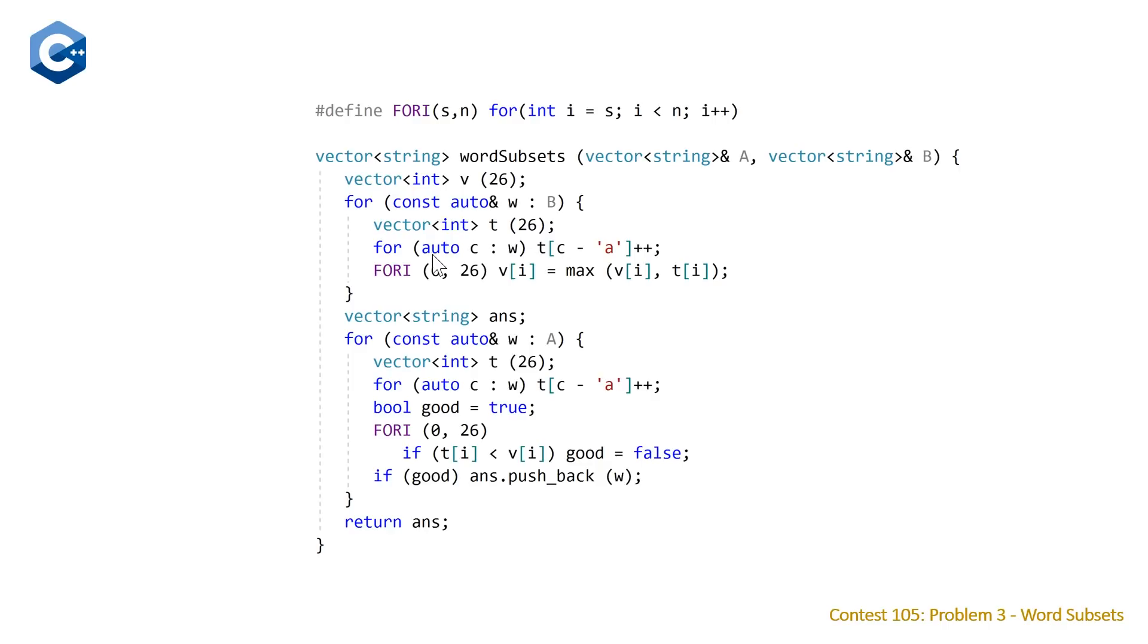And we're going to create our temporary count of each of the characters. And we do that by just looping through each of the characters in our current word, and then getting the index that maps to our current character, which we can just do by taking the character and subtracting the character A. And then we do a post increment here. And then once we've done this, we basically loop through each of the elements in our vector V. And we set the current element to be equal to the maximum of what we have from before, which initially is just zeros, and the temporary I. And so we're going to do that for each word.